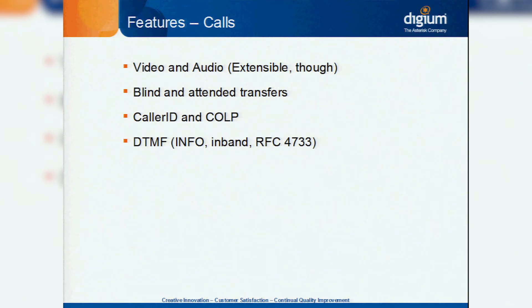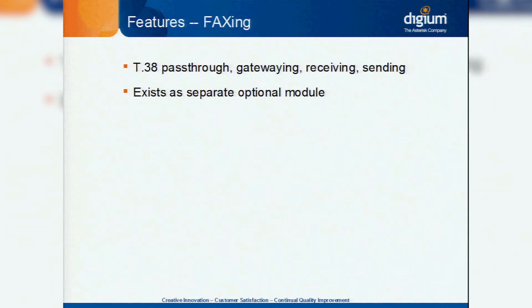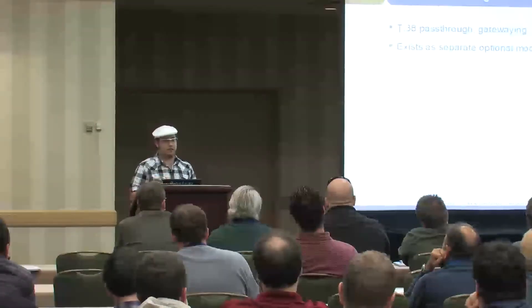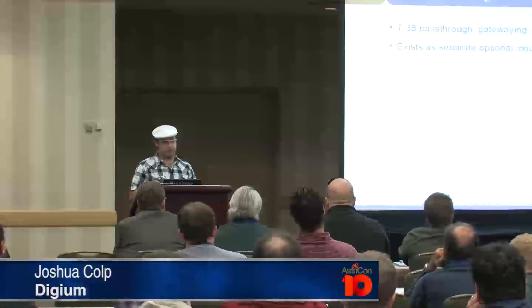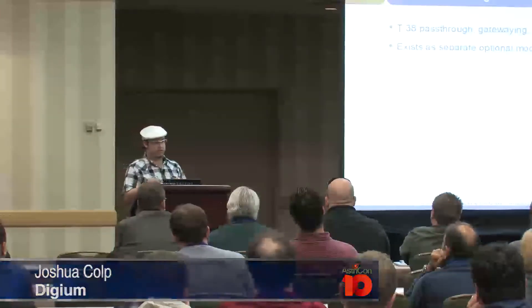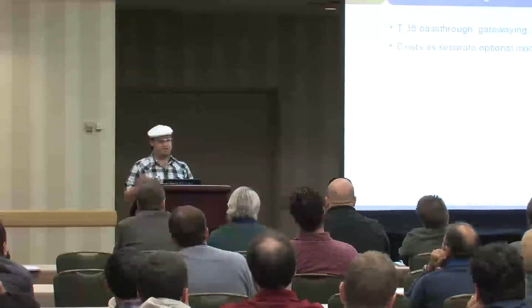We can also do blind and attended transfers, caller ID, and COLP — connected line updates. And DTMF: INFO, in-band, and RFC 4733. We didn't originally think we'd get fax into Asterisk 12 quite yet, but we were able to get T38 passthrough gatewaying — sending and receiving — just like you'd use with chan_sip in the new PJSIP work. The difference is, instead of T38 code spread throughout chan_sip, it exists as a completely separate module. So if you don't need T38 fax, you can completely unload it and not expose yourself to potential issues.